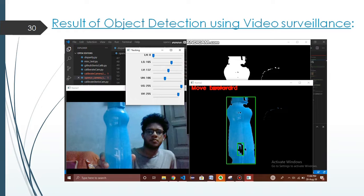On the above left hand side, you can see that it is generating a text called move backward. Since the bottle is very near to the camera, it is showing move backward. And if we move the bottle backward to a certain extent, it will show move forward.